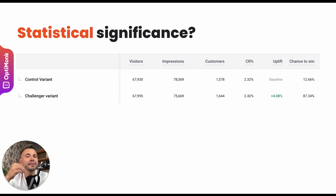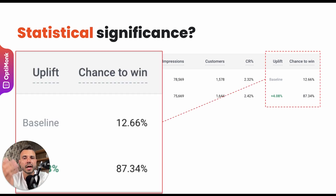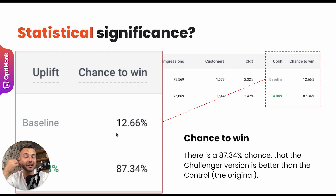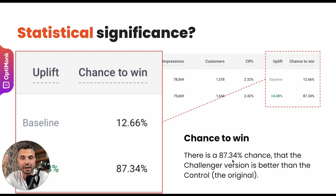We can usually say there's a 99% chance, for example, that the challenger is better than the control. In tools using Bayesian algorithms — like Optimonk, which also uses Bayesian — you'll see a term called 'chance to win'. It means, for example, that there's an 87% chance the challenger variant is better than the original version. But it also means there's still a 13% chance that this 4% uplift was purely due to luck and chance.